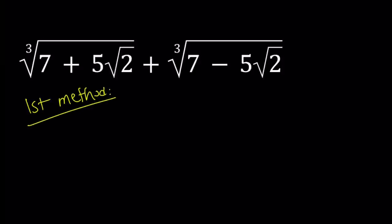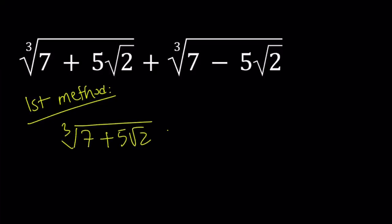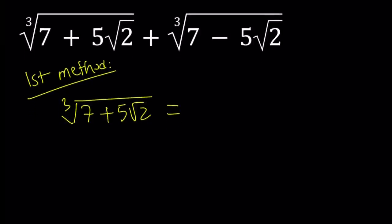For my first method I am going to use the pieces separately. So first of all I have the cube root of 7 plus 5 root 2. I'd like to simplify this so I'm just going to assume that this can be denested, meaning that I can write it as a plus b root 2 where a and b are rational numbers. This is not always the case obviously but we're just going to try to do it.